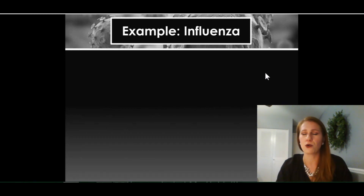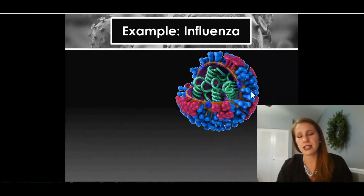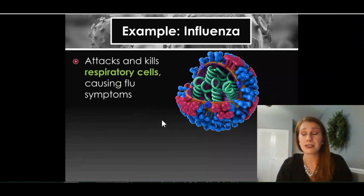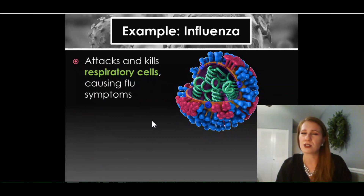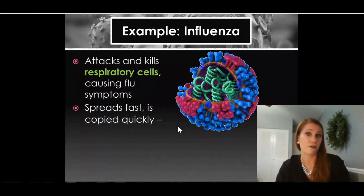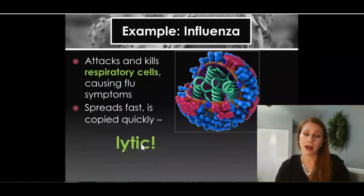Our first example is influenza, or the flu. Pretty much everybody's had the flu at some point, so this should ring true. Here's an example of what the influenza virus looks like — it's a spherical virus with DNA or RNA on the inside, a capsid, an envelope, and glycoproteins along the outside that attach to cells, especially in our throat and respiratory system. Its main job is to attack and kill respiratory cells, causing our scratchy throat, sneezing, and coughing. It spreads fast — you start feeling symptoms within 24 to 48 hours. This is a lytic virus because it replicates quickly.